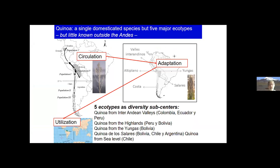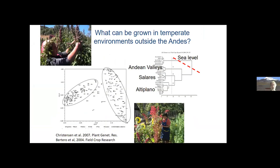Quinoa is known for the important balance of all essential amino acids that meet all FAO requirements. Its adaptation across different ecosystems of South America followed human migration, resulting in five major ecotypes adapted to conditions from sea level to more than 3,500 meters above sea level. The sea-level ecotype is the most important for adaptation outside the Andes, making it very difficult to use the local highland varieties from the Altiplano of northern Chile, Bolivia, or Peru in new countries.